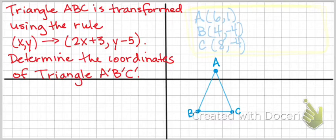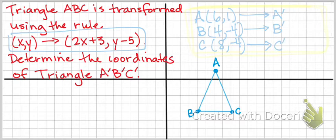Now we want to take each of these points, the coordinates of each of these points, and apply this rule here in order to come up with our new point A, A prime, our new point B, B prime, and our new point C, C prime.